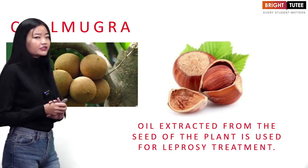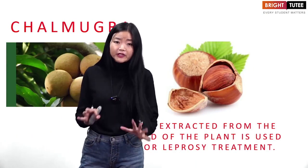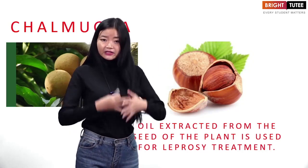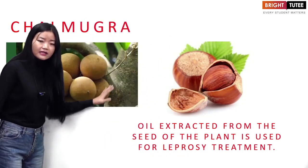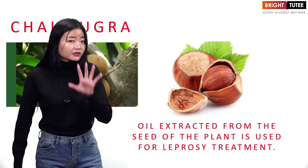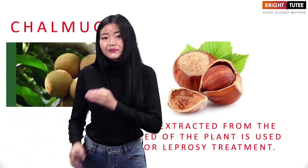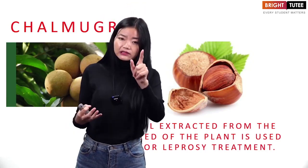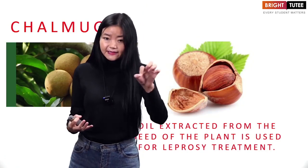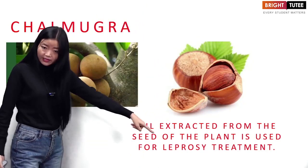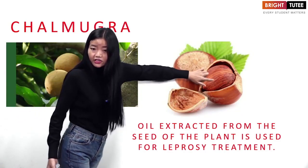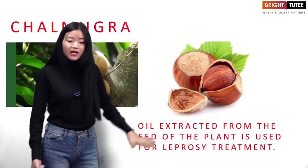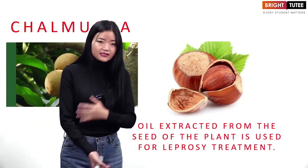There is a particular plant called jalmugra, which is very popular in Nagaland and is a very important plant gifted to us by nature. Jalmugra is used for leprosy treatment — the oil extracted from the seed of the plant is used for treating leprosy.